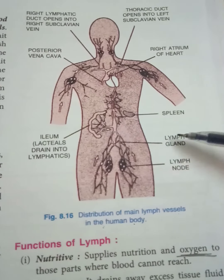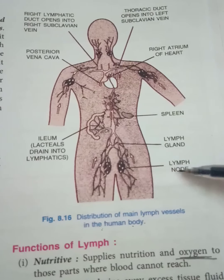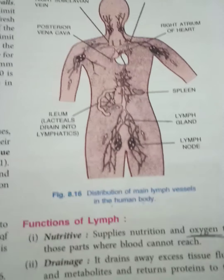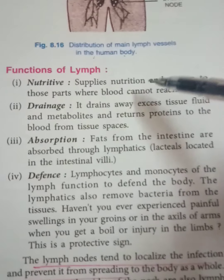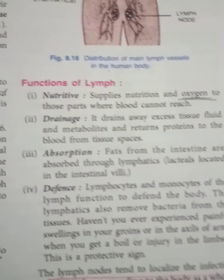The spleen is a major lymphatic organ. Lymph nodes are also present under the arms, in the throat and neck area, and in the groin area. The functions of lymph will be explained in the next video.